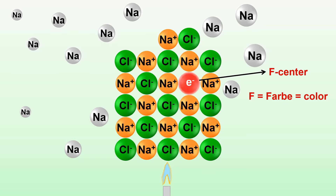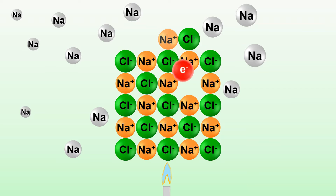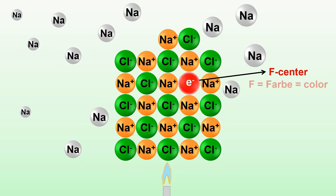The site occupied by this electron is what we refer to as an F-center. Here, F means 'Farbe', a German word for colour. Watch the formation of the F-center once again.